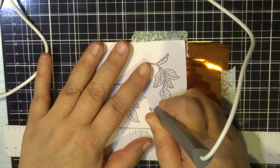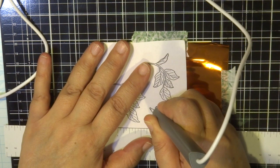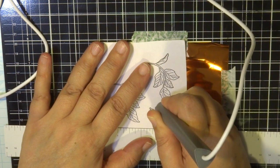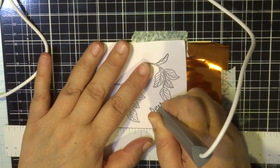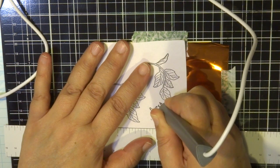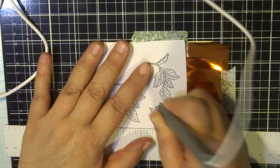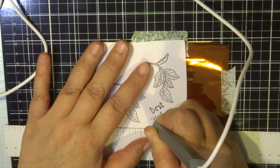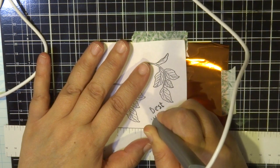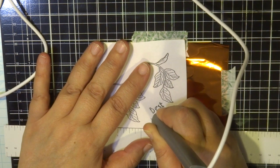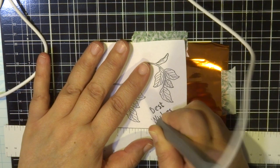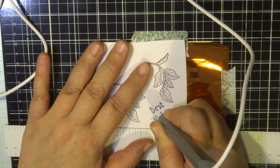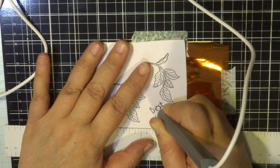And then another thing you could use is you don't have to actually stamp an image or a word sentiment. You can also print it from your computer onto some copy paper, some words or some special invitation words that you can just trace over with your hot foiling pen. How brilliant is that?